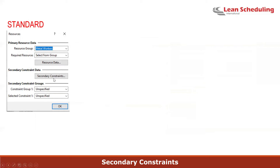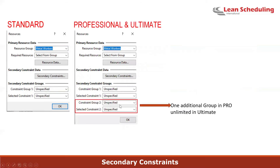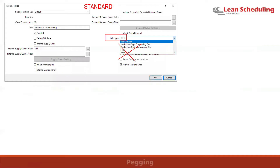Secondary constraints can be anything from teams of people to tooling items. In the Standard version, you can create one group of secondary constraints for Op Center to select from. In the Professional, you get an additional constraint group, and in the Ultimate, you can have as many constraint groups as you need.